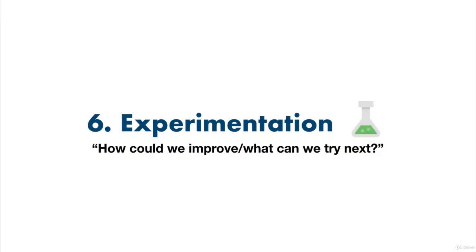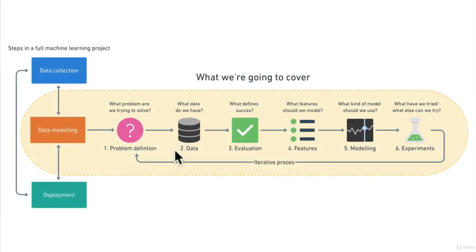Y'all ready for this? We've got step six, which is experimentation. It's important to remember all of these steps here are a highly iterative process, meaning you might try one thing, find out it doesn't work, then try another and another and another and just keep going through this loop.